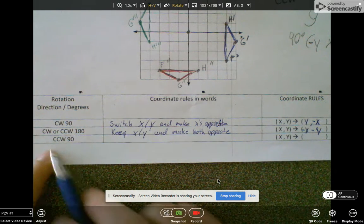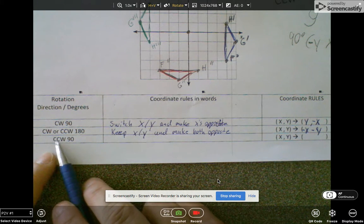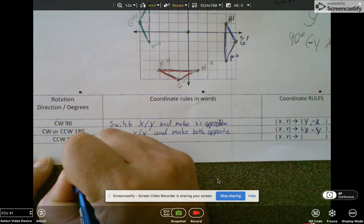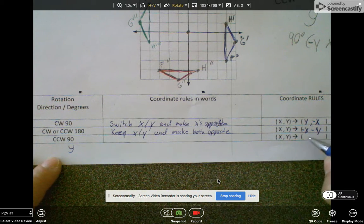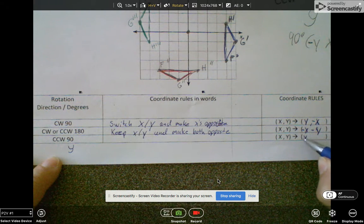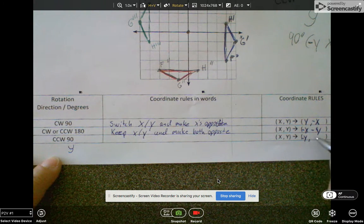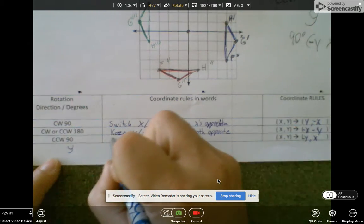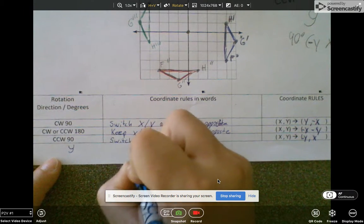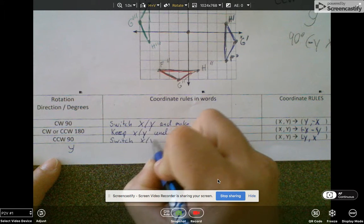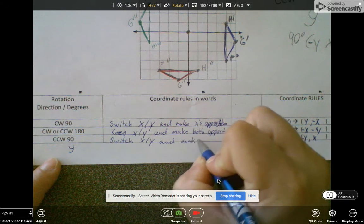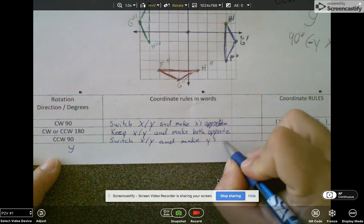The last rule to write out is 90 degrees counterclockwise. Again, see those double C's and kind of curl them this way to make a Y. So now I know that I'm going to make Y opposite this time. So I still switch them, make Y opposite. Let me write that down: Switch X/Y and make Y's opposite.